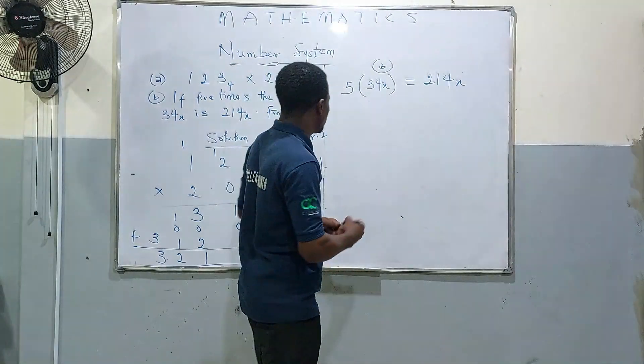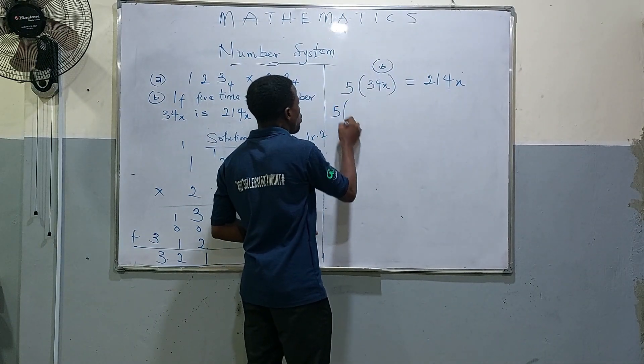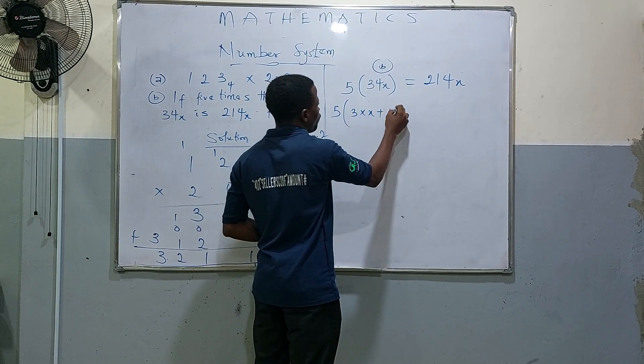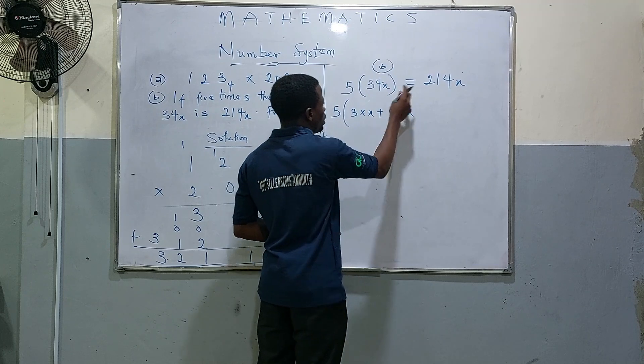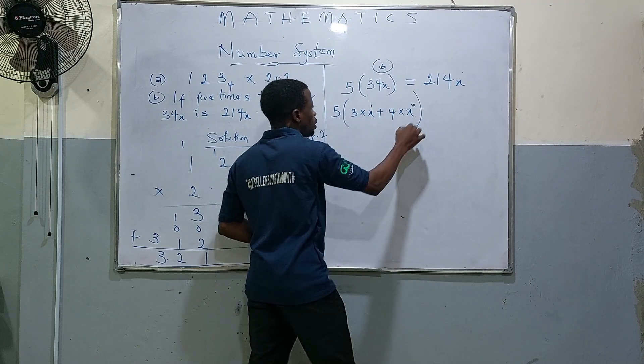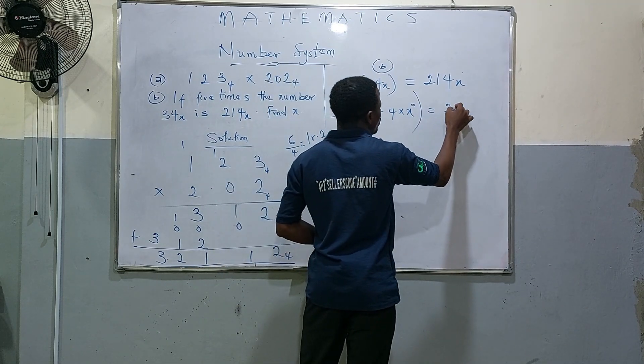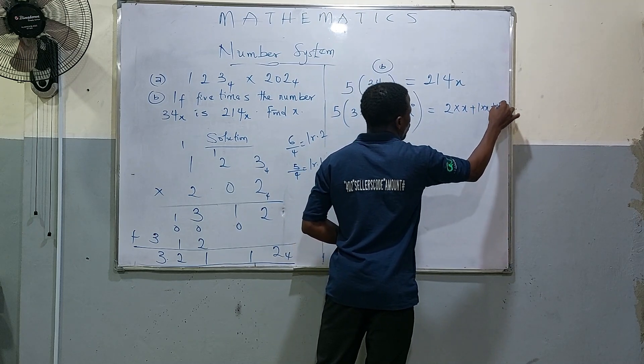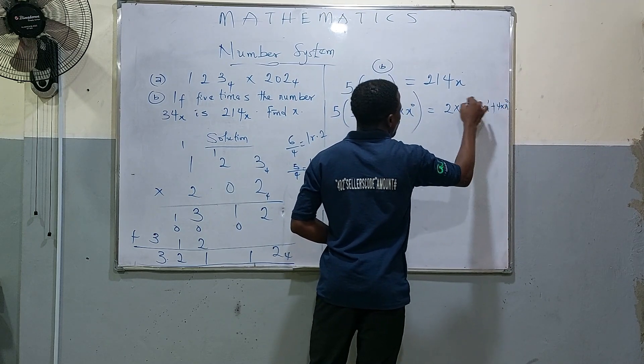So change this to base 10. We're going to be, open bracket, 3 times x plus 4 times x power 0. This is equal to 1. So 2 times x² plus 1 times x plus 4 times x⁰, that's 1, 2.